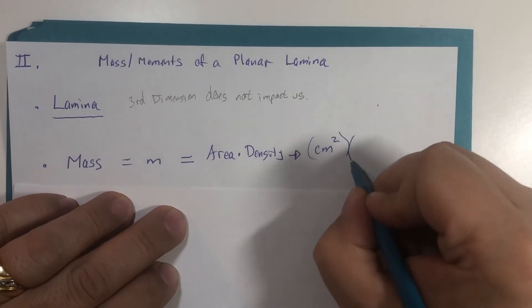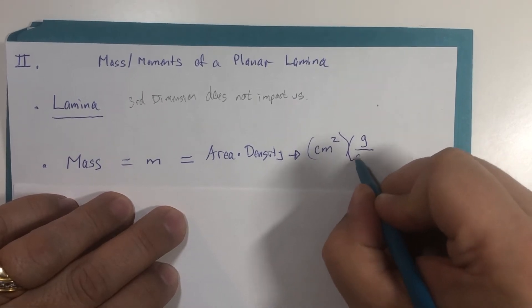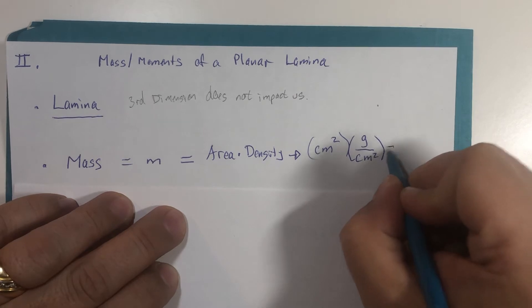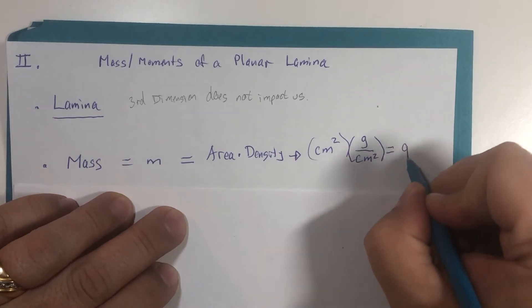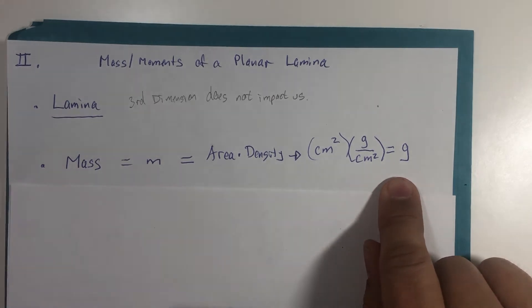And then we could be calculating a density of grams per square centimeter, and then when we're done with multiplication we would have grams, which is a mass unit. That would just be one example.